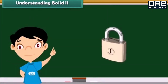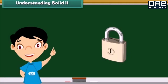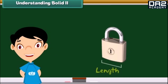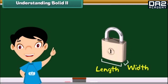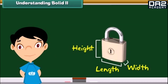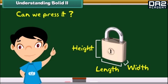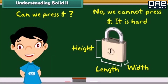Now see this lock. Is this a solid? You are correct. This lock is a solid. It has a fixed shape. It has length, width and height. And can we press it? No, we cannot press it. It is hard.